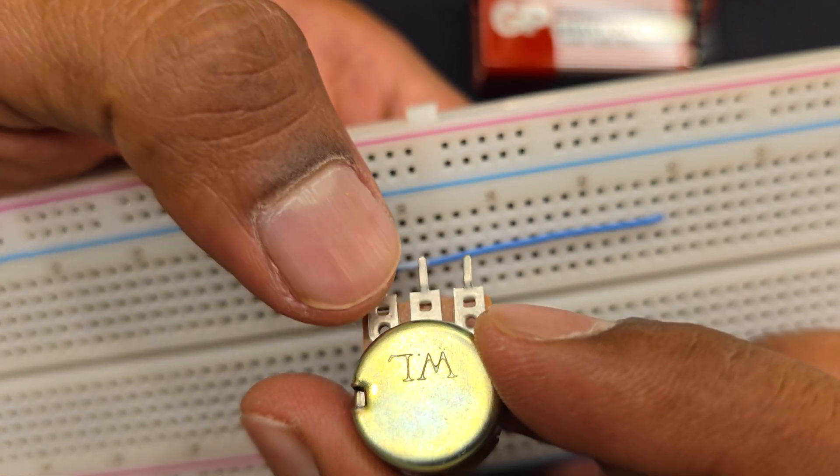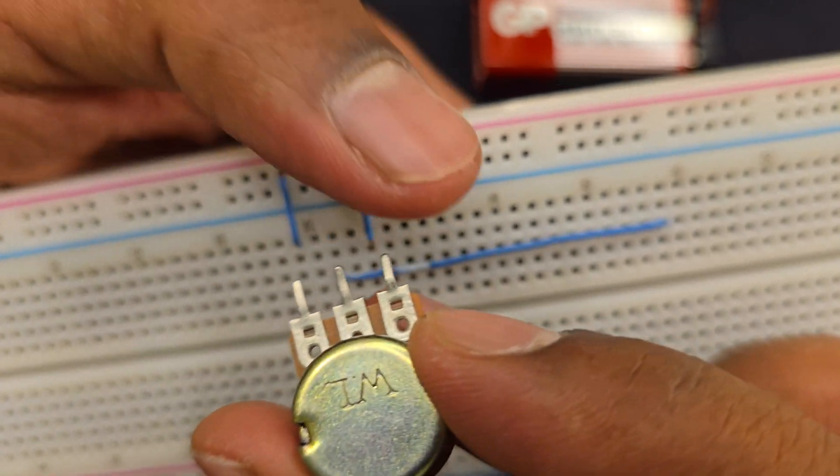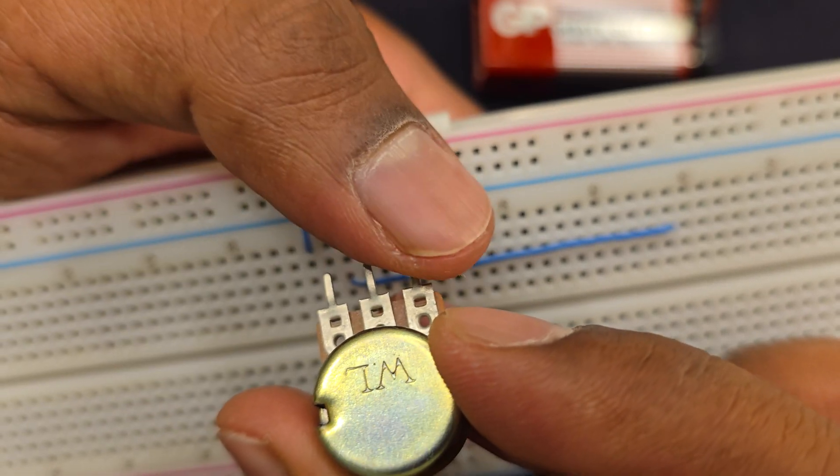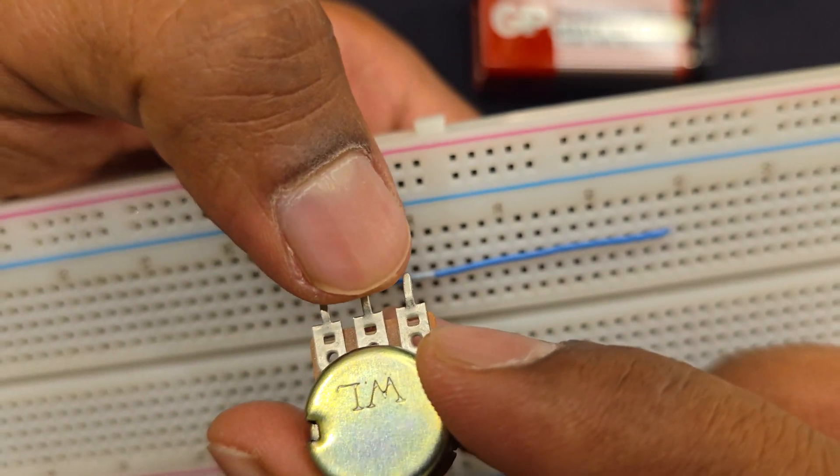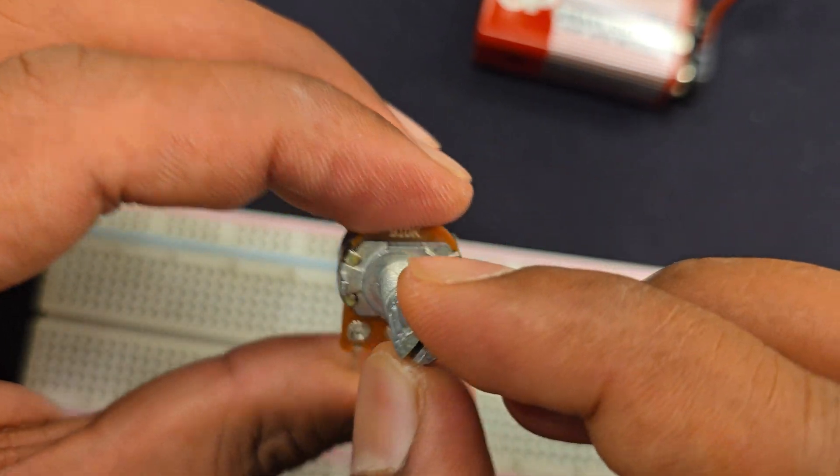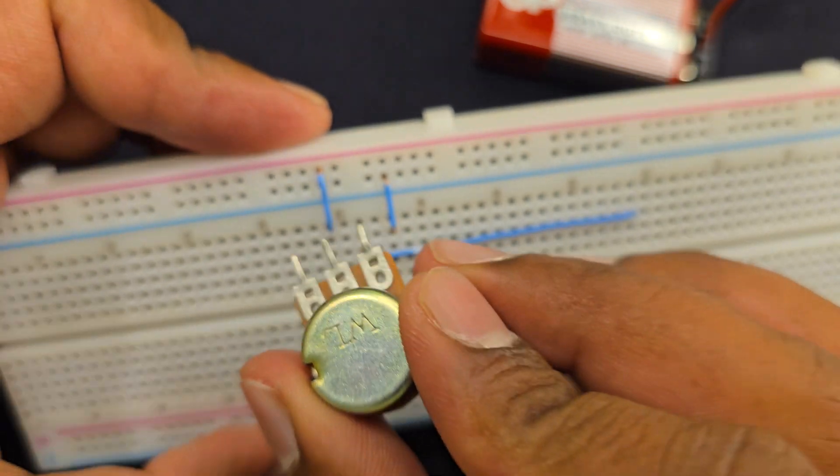This is basically a resistor connected between these two pins on the farther side, and there is a middle pin which is connected to a slider which slides over the resistor. So it changes the values of the resistance, and thus the voltage.